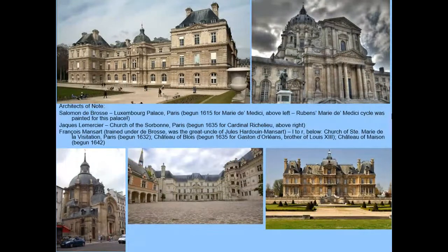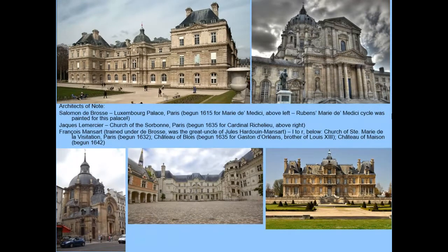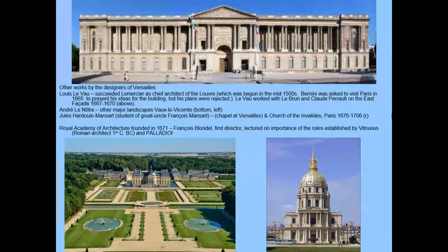The architects who worked on Versailles did multiple projects throughout France that were similar to what you see there. These are the types of palaces that the aristocracy was used to having. The royal families throughout Western Europe had more than one individual residence, and those buildings needed to house multiple people, servants, courtiers, etc. It was not unusual for families to move from palace to palace at different times.